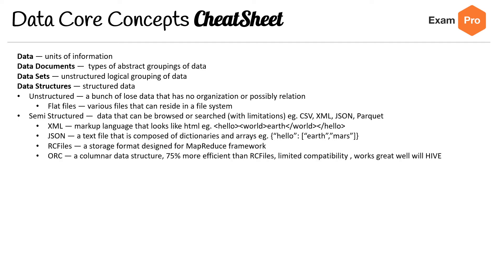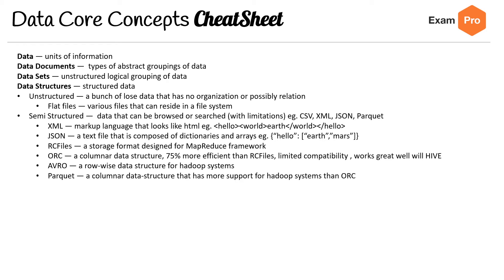ORC is a columnar data structure that is 75% more efficient than RC files, with limited compatibility but works very well with Hive. Avro is a row-wise data structure for Hadoop systems. Parquet is a columnar data structure that has broader support for Hadoop systems than ORC.